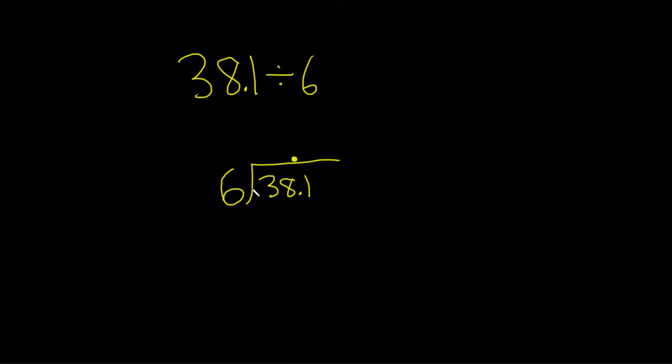Now we'll start the division process. We're just going to divide like we do whole numbers. Look at the 6 and ask, does it go into 3? It does not. What about 6 going into 38? Well, 6 times 6 is 36. So we'll put a 6 here above the 8, and then we multiply: 6 times 6 is 36.